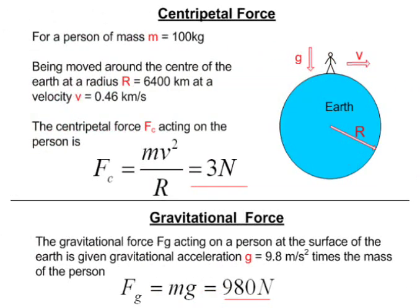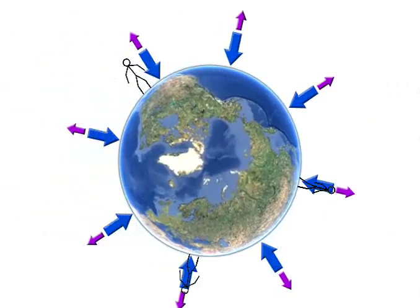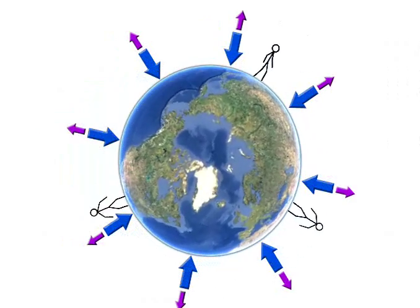Well, the magnitude of the centripetal force on a person on earth is given by the person's mass times its velocity due to the rotation of the earth squared, divided by the radius of the earth. And if you do the math, you will see that the centripetal force required to keep you on the earth's surface is much smaller than the gravitational force due to your mass.